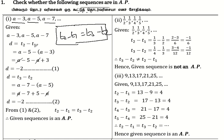Term 2 minus Term 1. Term 1 is (a minus 3). Term 2 is (a minus 5). So Term 2 minus Term 1 equals (a minus 5) minus (a minus 3), which gives minus a plus a cancel, and minus 5 plus 3, so Term 2 minus Term 1 equals minus 2.